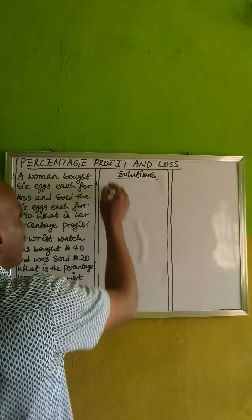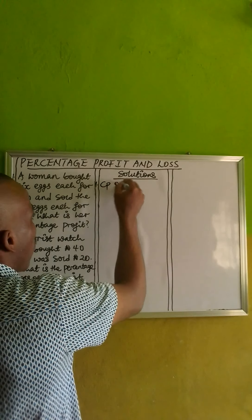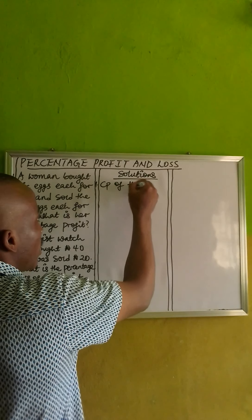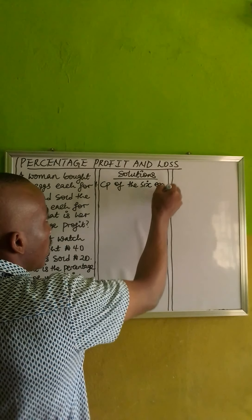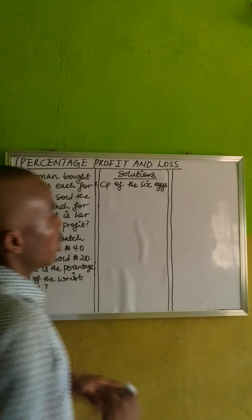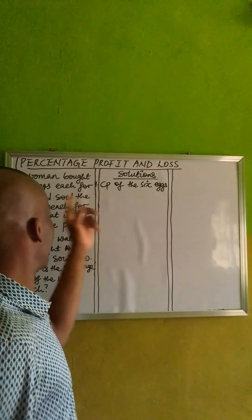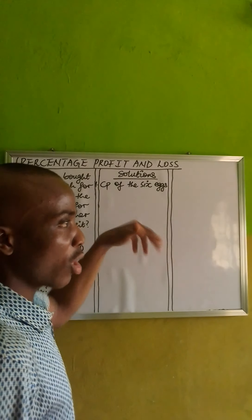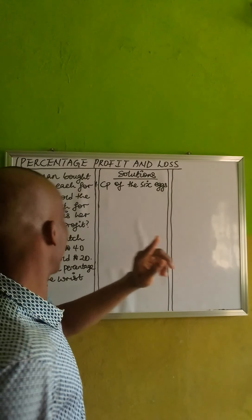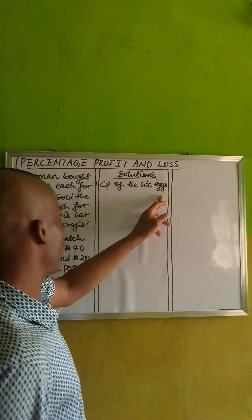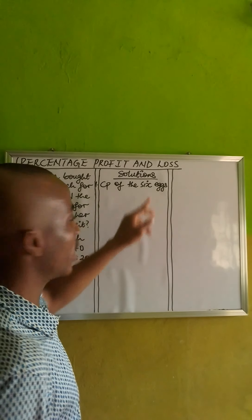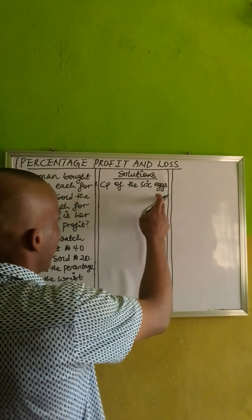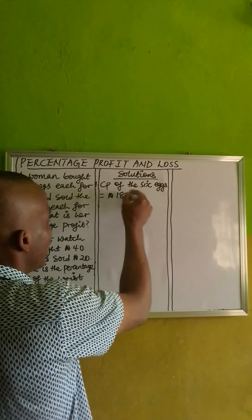Now, we know that the cost price — I can abbreviate that as CP — the cost price of the 6 eggs. She bought 1 egg for 30 Naira, which means the cost price of the 6 eggs, if 1 egg is 30 Naira, will be 30 times 6. This will give 180 Naira. So the cost price of the 6 eggs is 180 Naira.